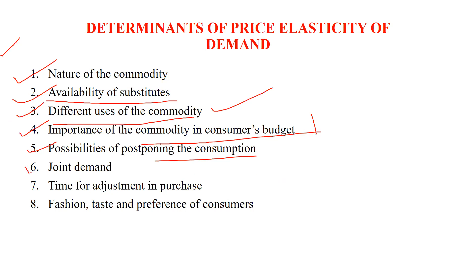Another determinant is the possibility of postponing consumption — how much is the possibility that we can postpone our consumption. Then we come to joint demand. Joint demand means, for example, a car and petrol — both are required together. It is not possible to demand a car without petrol or diesel; you cannot use that commodity without the other.